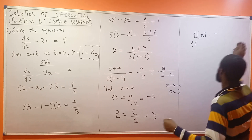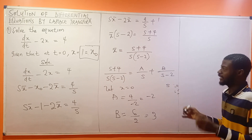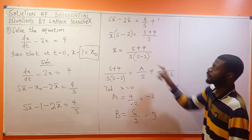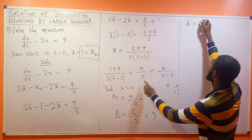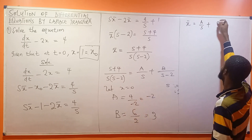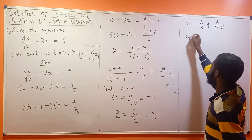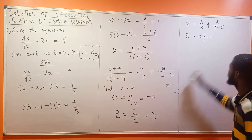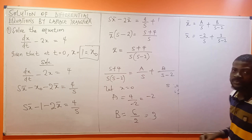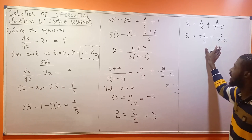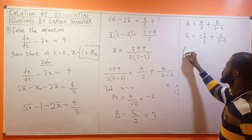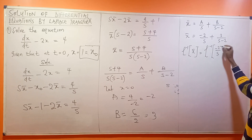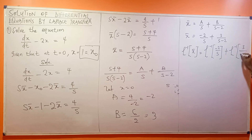So A is minus 2 and B is 3. Therefore S bar equals A over S plus B over S minus 2, which gives S bar equal to minus 2 over S plus 3 over S minus 2. Now we've been able to write this properly. Let us take the inverse Laplace of both sides: inverse Laplace of S bar equals inverse Laplace of minus 2 over S plus inverse Laplace of 3 over S minus 2.